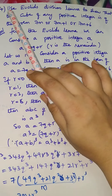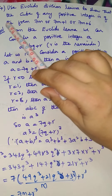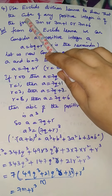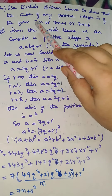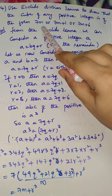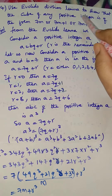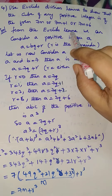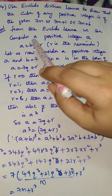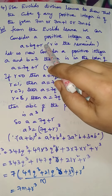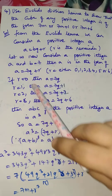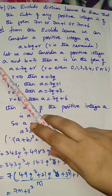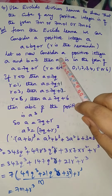Now the fourth sum. In the third sum, square was given, but in the fourth sum, cube is given. And the values are 7m, 7m plus 1, and 7m plus 6. From Euclid's lemma, we can consider a positive integer a equals b cube plus r. Let us consider a positive integer a and b equals to 7.